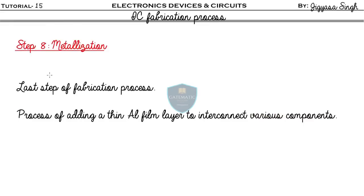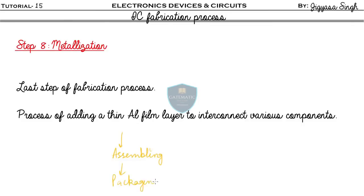Step eight, the last step, is metallization. In this process, a thin aluminum film layer is added to interconnect various components. After that, we do the assembling and then the packaging, and it is sent to market.